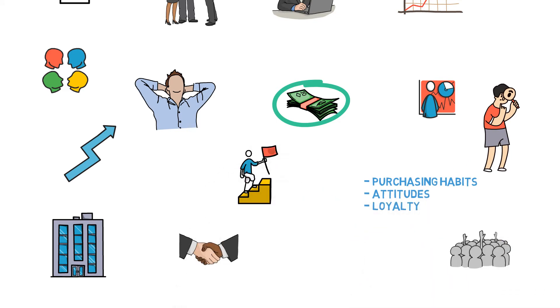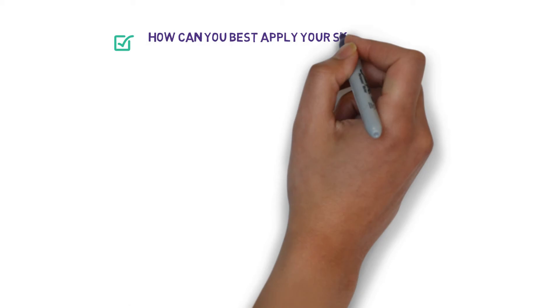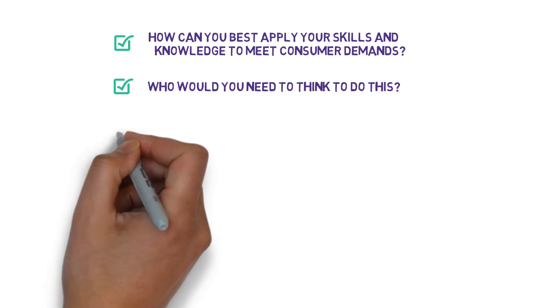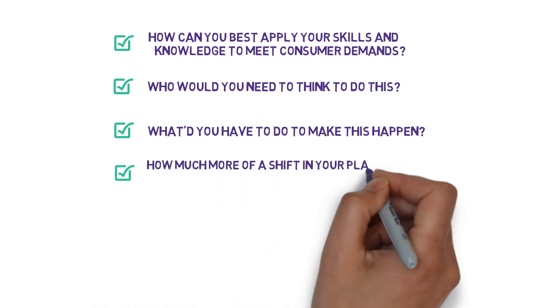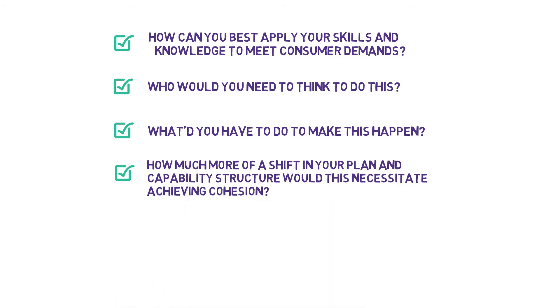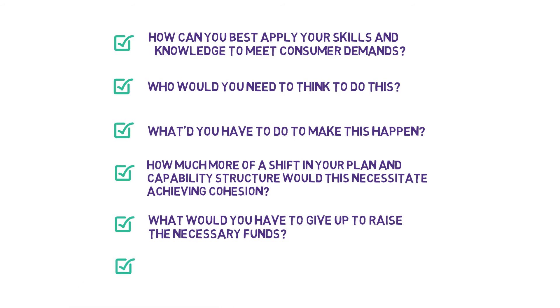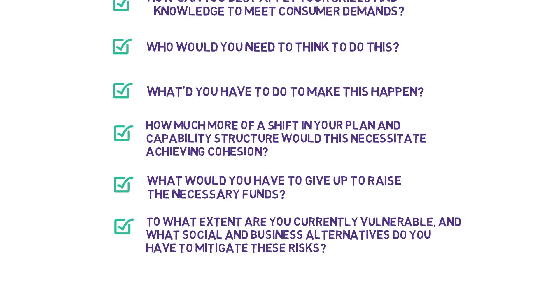Some authorities have undertaken steps to maintain system stability, protect innocent consumers, and strengthen businesses' financial trends. Take an honest look at your situation and ask yourself these questions: How can you best apply your skills and knowledge to meet consumer demands? Who would you need to think to do this? What did you have to do to make this happen, e.g., mergers and acquisitions, natural expenditures, partnering? How much more of a shift in your plan and capability structure would this necessitate achieving cohesion? What would you have to give up to raise the necessary funds? To what extent are you currently vulnerable and what social and business alternatives do you have to mitigate these risks?